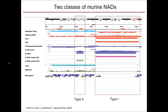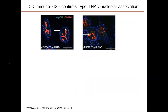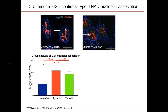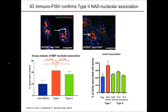We used 3D FISH to confirm the existence of Type 2 NADs. In images for both Type 1 and Type 2 NADs, nucleoli are shown in red (stained by fibrillarin), the nuclear periphery by nuclear pore complex proteins, and the FISH probe in green. Type 1 and Type 2 NADs both associate with nucleoli at significantly higher frequency than non-NAD negative controls. In contrast, when we scored lamina association, Type 1 NADs showed statistically significant association with the nuclear periphery, whereas three different probes from Type 2 NADs showed no significant association with the nuclear periphery.